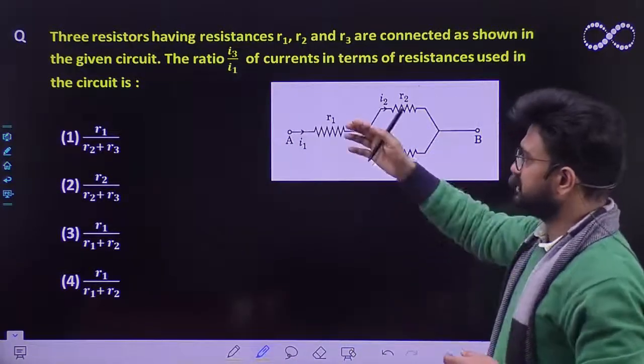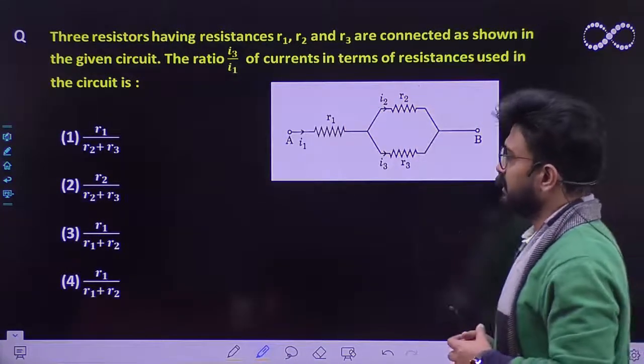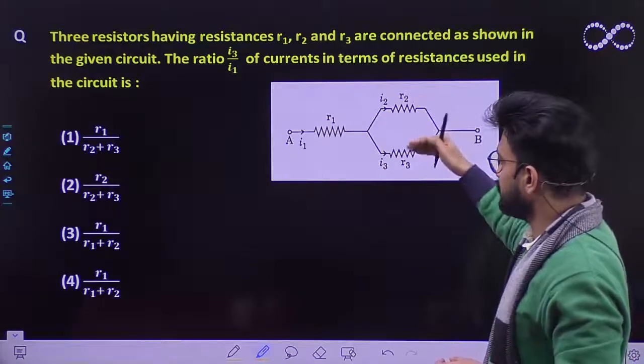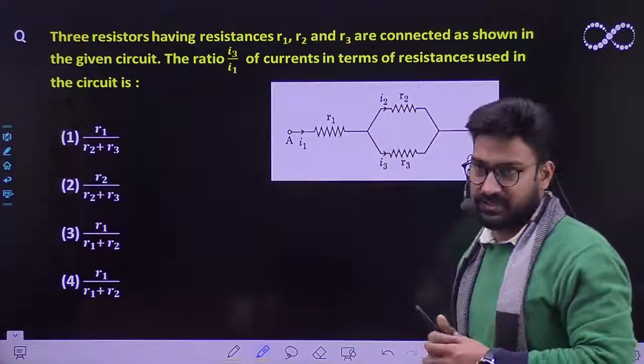The question says three resistors having resistance R1, R2 and R3 are connected as shown in the figure. The ratio of I3 by I1 of the currents in terms of resistances used in the circuit is: